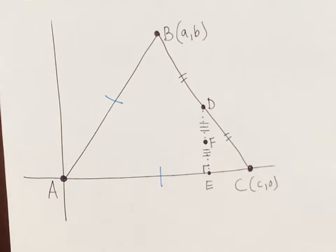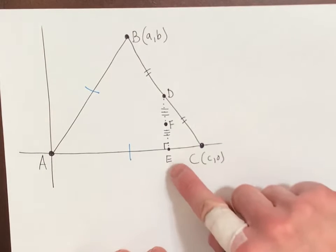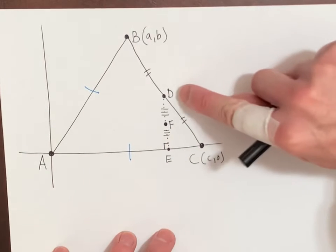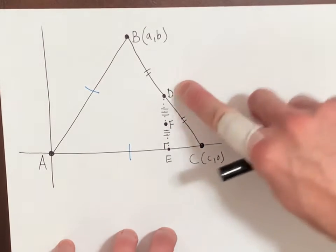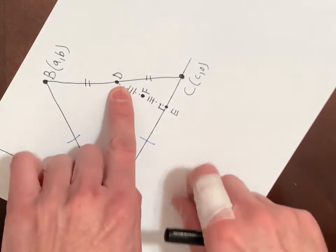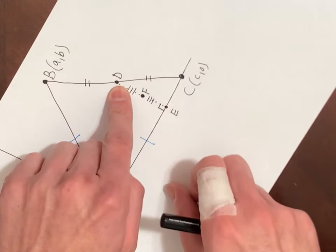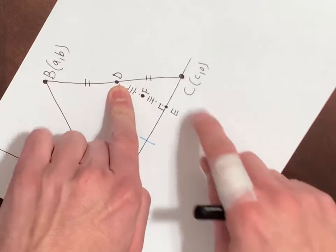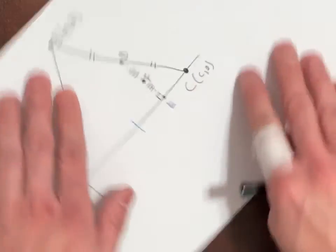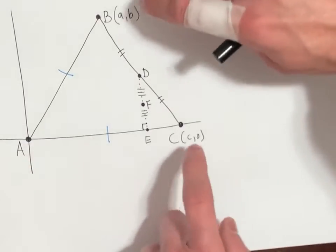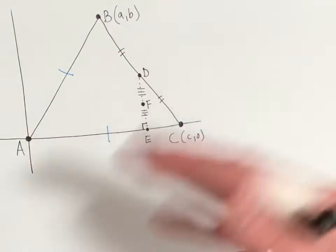Part A asks for the coordinates of E and F in terms of A, B, and C. Notice that point D is right between B and C, it's the midpoint. So how can I find the coordinates of D? Find the midpoint. I know B and I know C, so find the midpoint of these guys, and that's D.